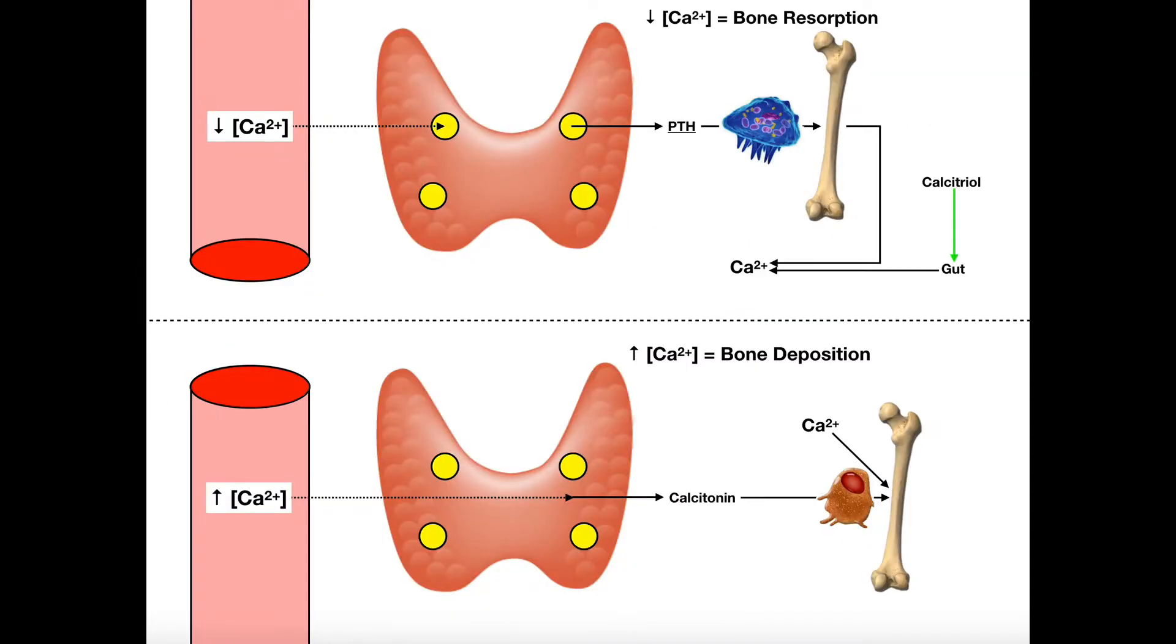Now osteoclasts can kind of get a bad rap, and that's because if you just think about it superficially, they're decreasing bone mineral density, they're degrading bone tissue, and that seems like a bad thing. And if it goes on prolonged, it can cause osteoporosis. But under normal conditions where someone's not in danger of osteoporosis, osteoclast activity is very important.